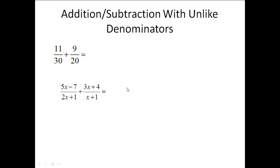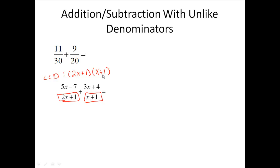On the second one, we still need to find the least common denominator since the denominators are not the same. When I look at the first denominator and try to factor it, it doesn't factor, so I have to have the family of 2x plus 1. The second denominator doesn't factor either, so I need x plus 1. The ones don't overlap because these are families — you have to take all or nothing. So the LCD is 2x plus 1 times x plus 1.